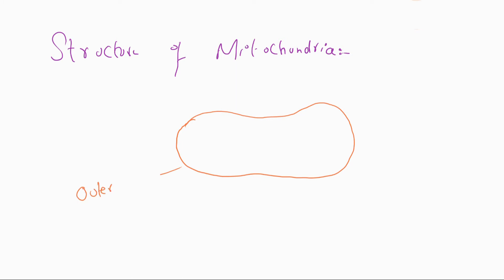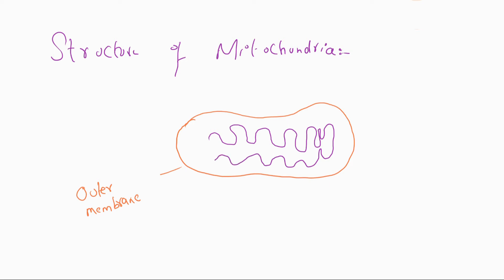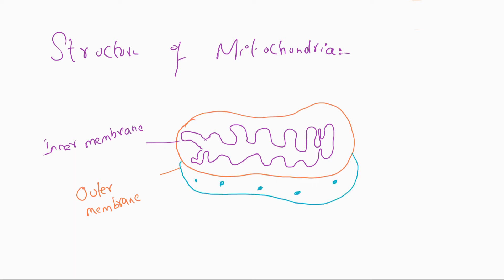The outer membrane of mitochondria is a smooth membrane, while the inner membrane of mitochondria forms infoldings. It is present in the form of folding. Between the outer and inner membranes is the outer space of mitochondria.